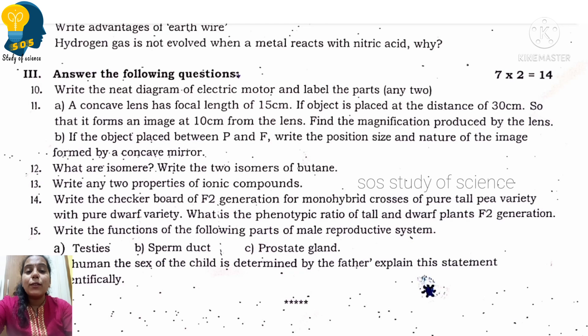Moving to next question. A concave lens has a focal length of 15 cm. If the object is placed at a distance of 30 cm, so it forms an image at 10 cm from the lens. Find the magnification produced by the lens. First of all, write the given values. Focal length is given, distance is given, and image formation is given. Write all the given values. Then identify magnification. The magnification formula is M equals V by U. Apply this formula. You try and write the answer in the comment area. Let me see how many of you will answer.